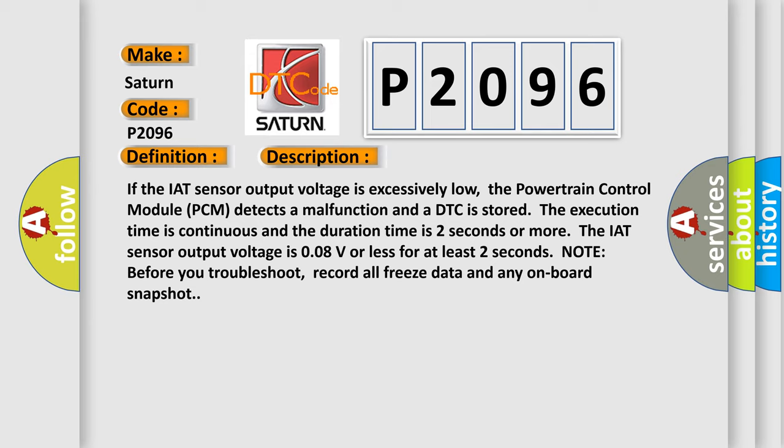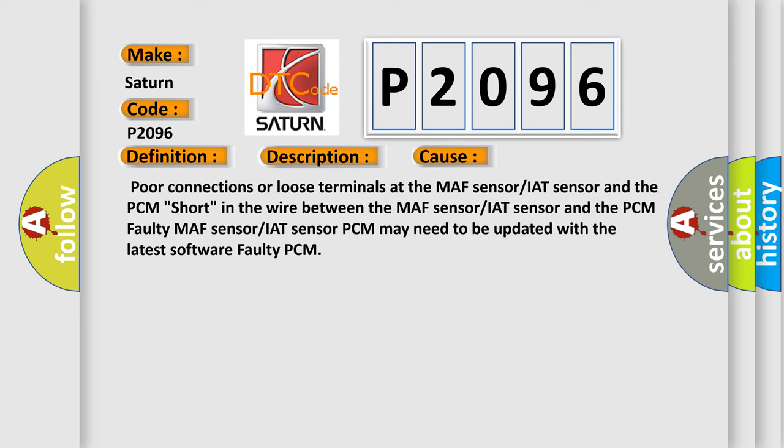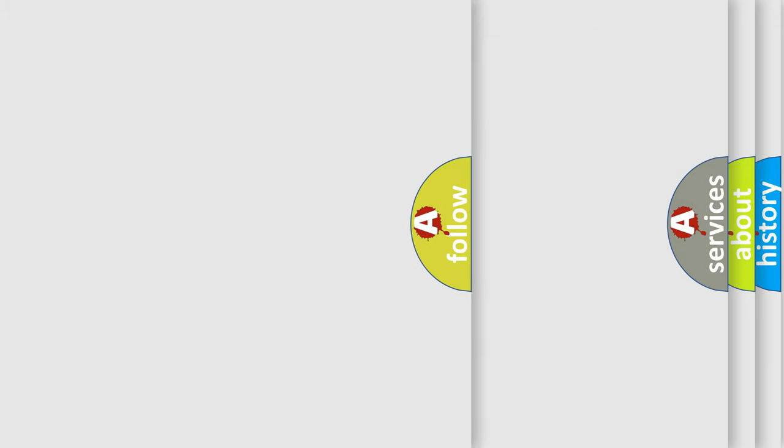Note: before you troubleshoot, record all freeze data and any onboard snapshot. This diagnostic error occurs most often in these cases: poor connections or loose terminals at the MAF sensor/IAT sensor and the PCM; short in the wire between the MAF sensor/IAT sensor and the PCM; faulty MAF sensor/IAT sensor; PCM may need to be updated with the latest software; faulty PCM. The airbag reset website aims to provide information in 52 languages.